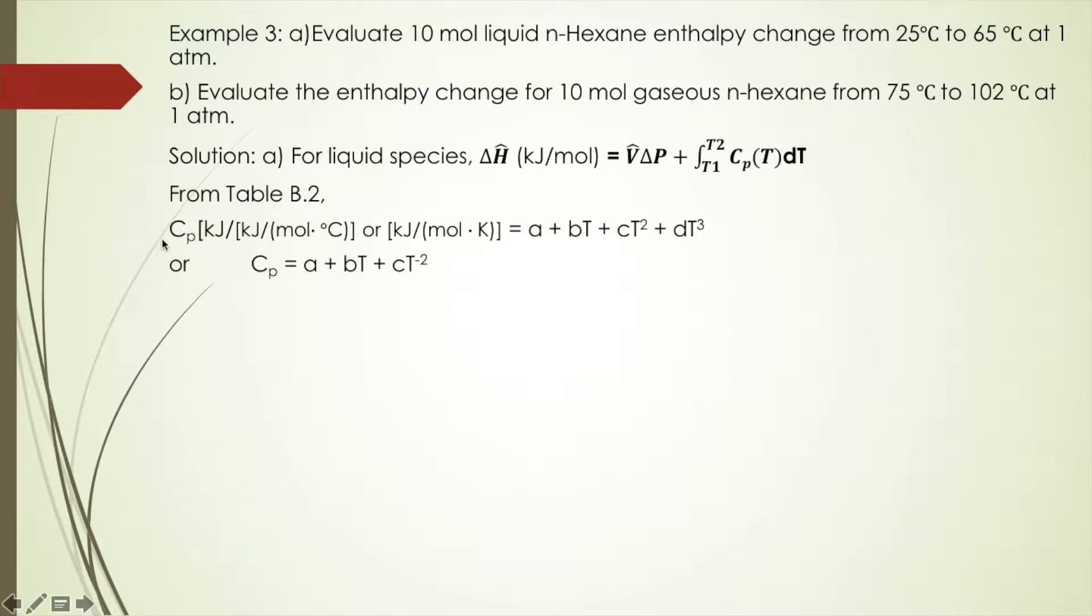We can find the constants for heat capacity from Table B.2. There are two ways to write the equation; I prefer the second equation because it requires fewer constants and less calculation. For liquid n-hexane, we find that a = 216 × 10^-3. Make sure you have the right exponent.